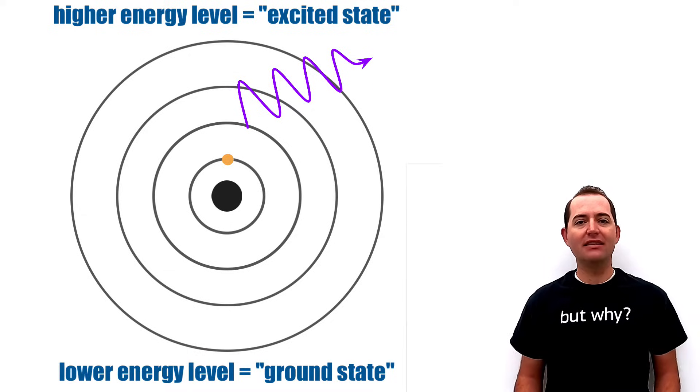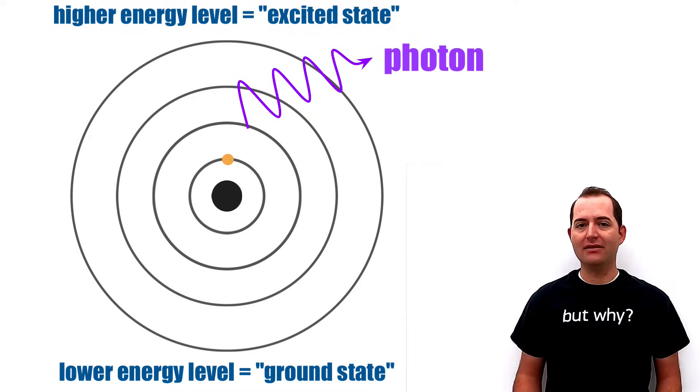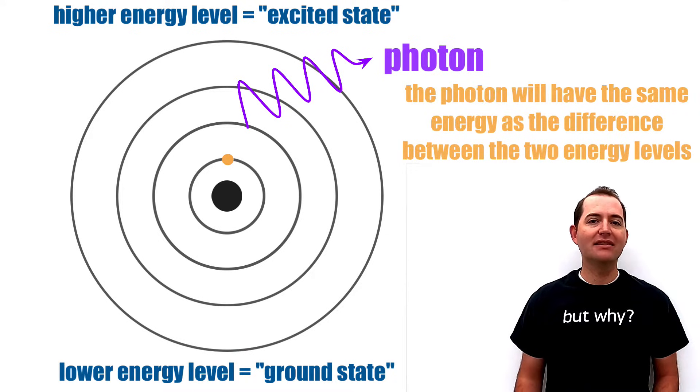The energy they release is in the form of a photon or light. That photon will have the same energy as the difference in the two energy levels in the atom, from the excited state to the ground state.